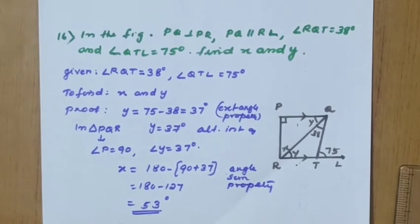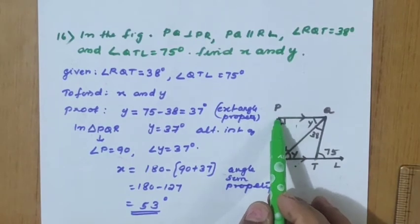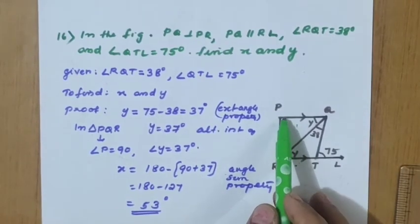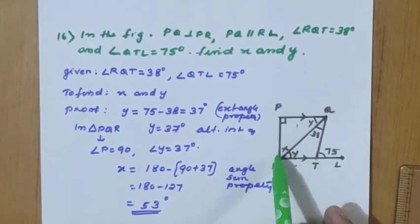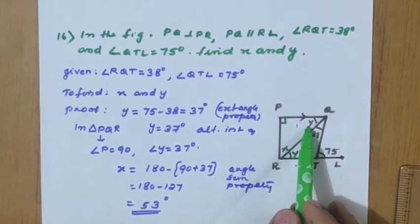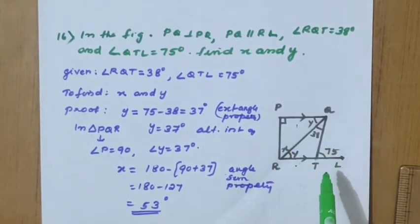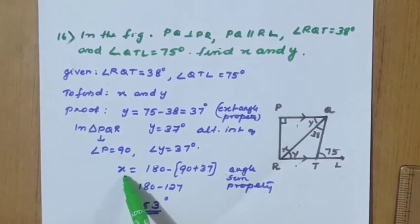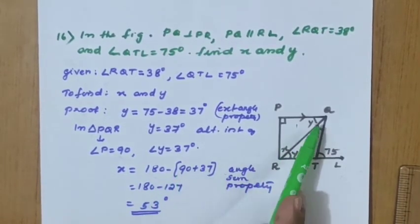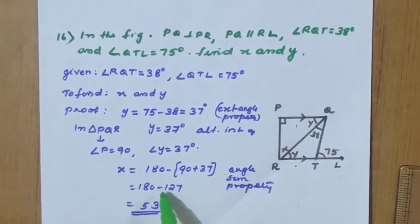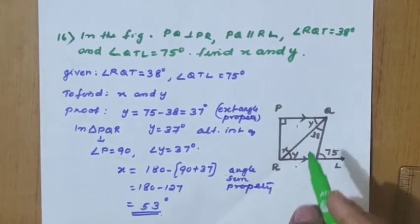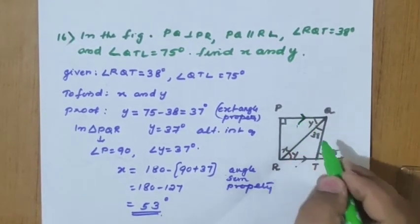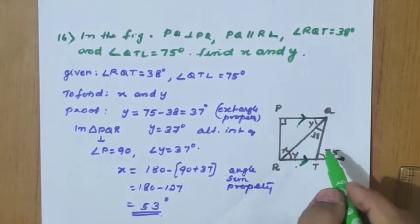Now to calculate x: it is given that PQ and PR are perpendicular, so triangle PQR has angle P equal to 90 degrees. By the angle sum property, x plus y plus 90 equals 180 degrees. So x equals 180 minus (90 plus 37), that is 180 minus 127, which equals 53 degrees.